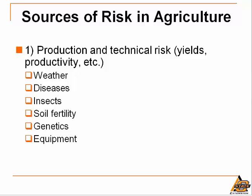Risk in agriculture is a big, almost overwhelming topic. It is helpful to break down the various sources of risk into categories or similar types. There are seven general categories of risk utilized to describe risk and risk management strategies in agriculture. The first one is easy for most producers to think about — anyone in agriculture, especially in a state like Oklahoma, is certainly familiar with production risk.